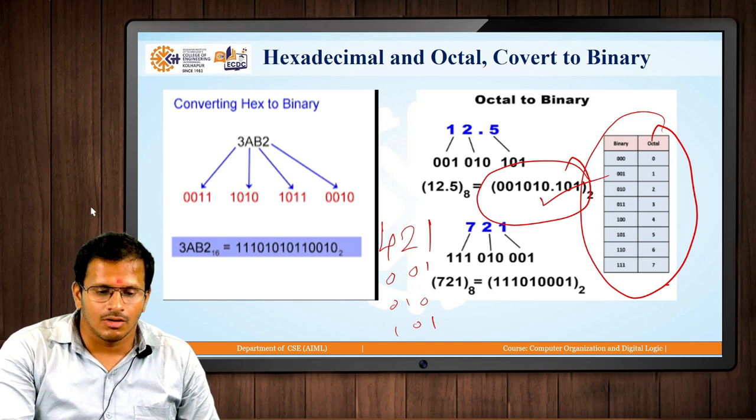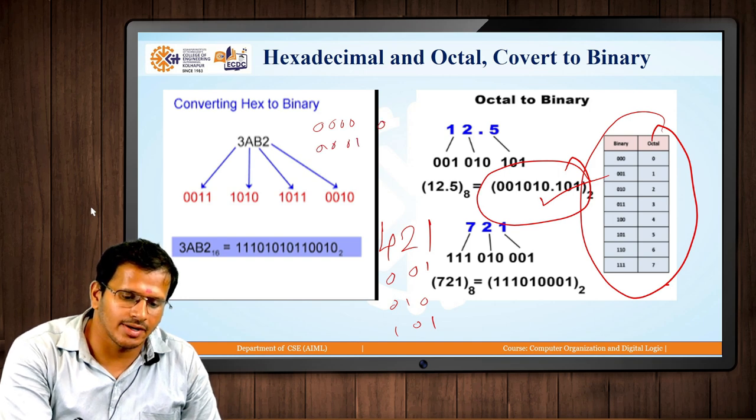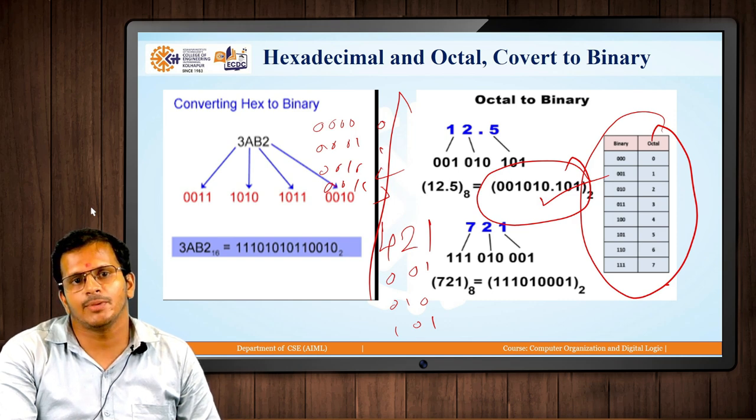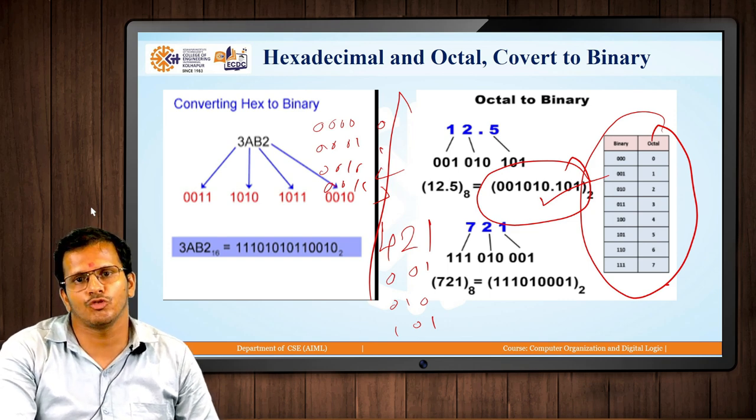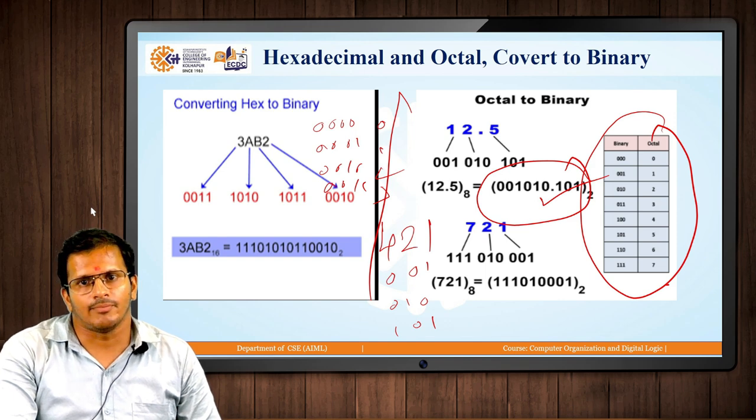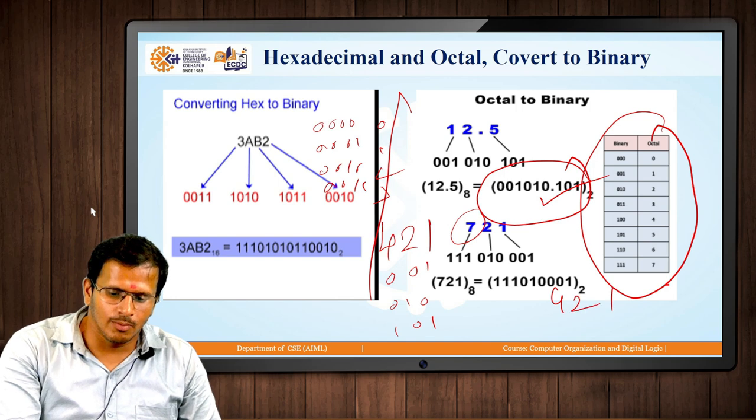For hexadecimal, 0000 is 0, 0001 is 1, 0010 is 2, 0011 is 3, and so on. For hexadecimal to binary, remember 8421 format for each number. For octal to binary, use 421 format. For example, 7 in 421 is represented as 111.